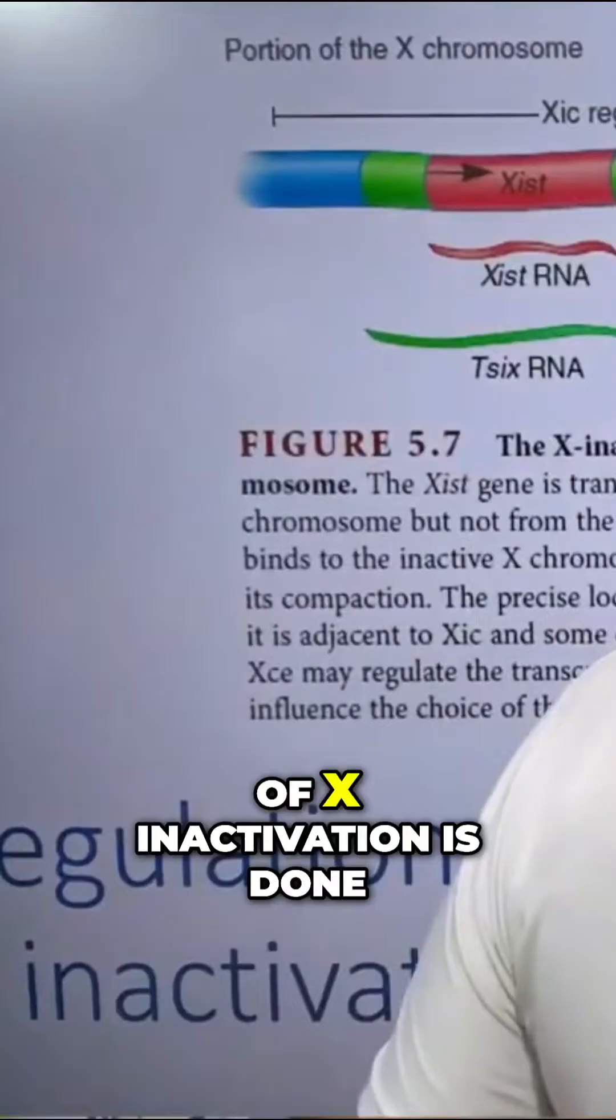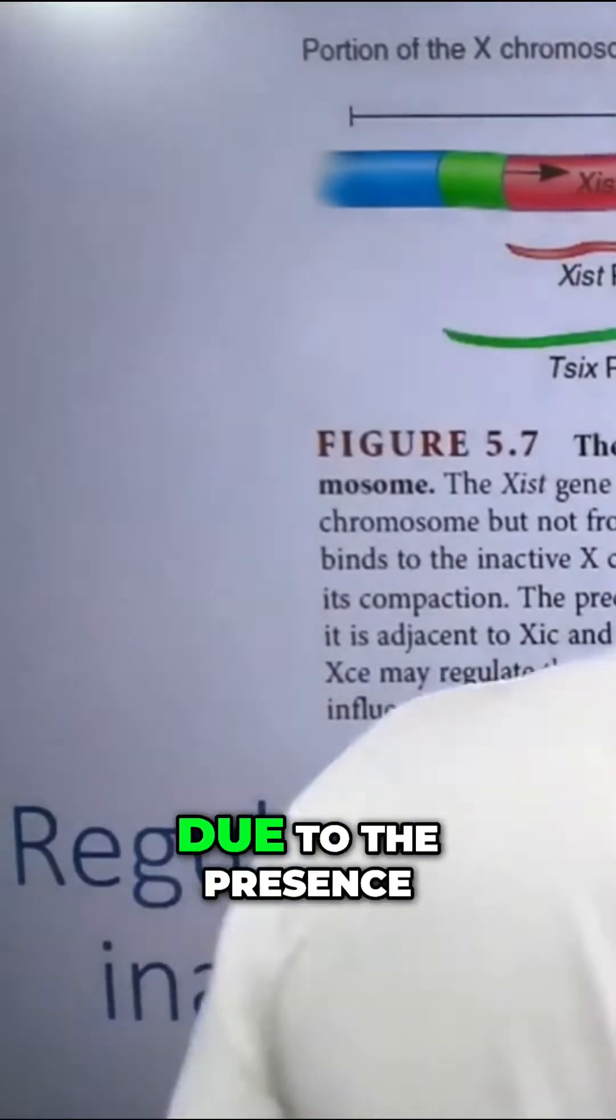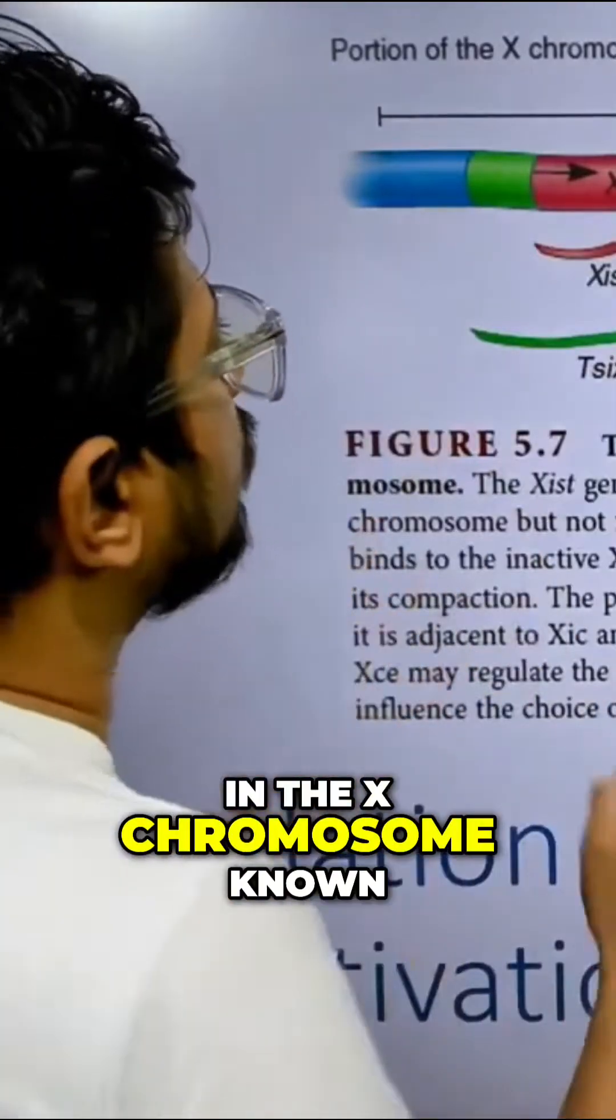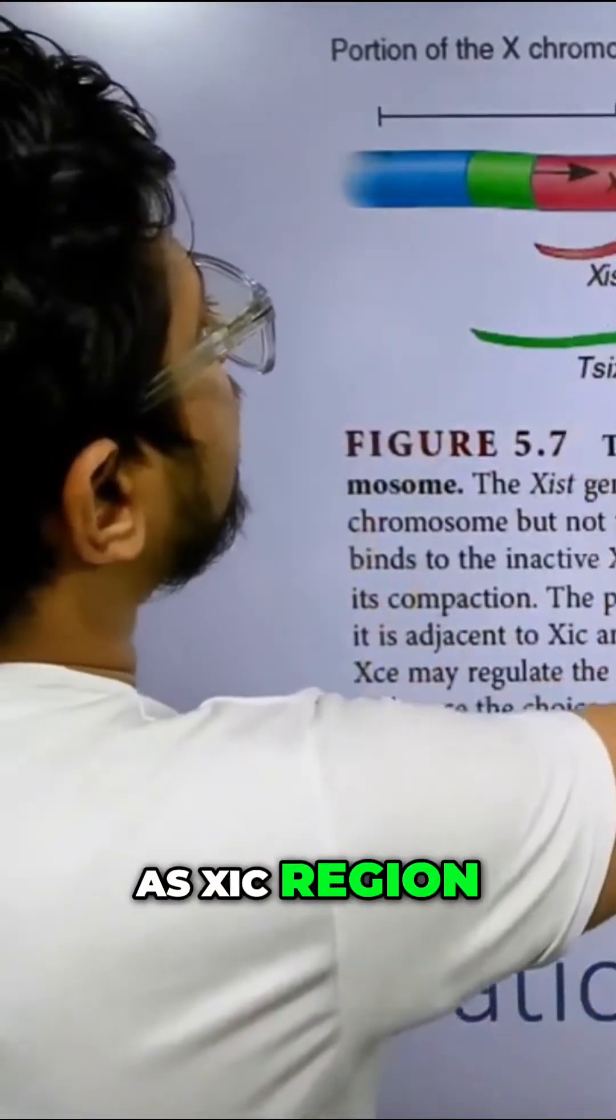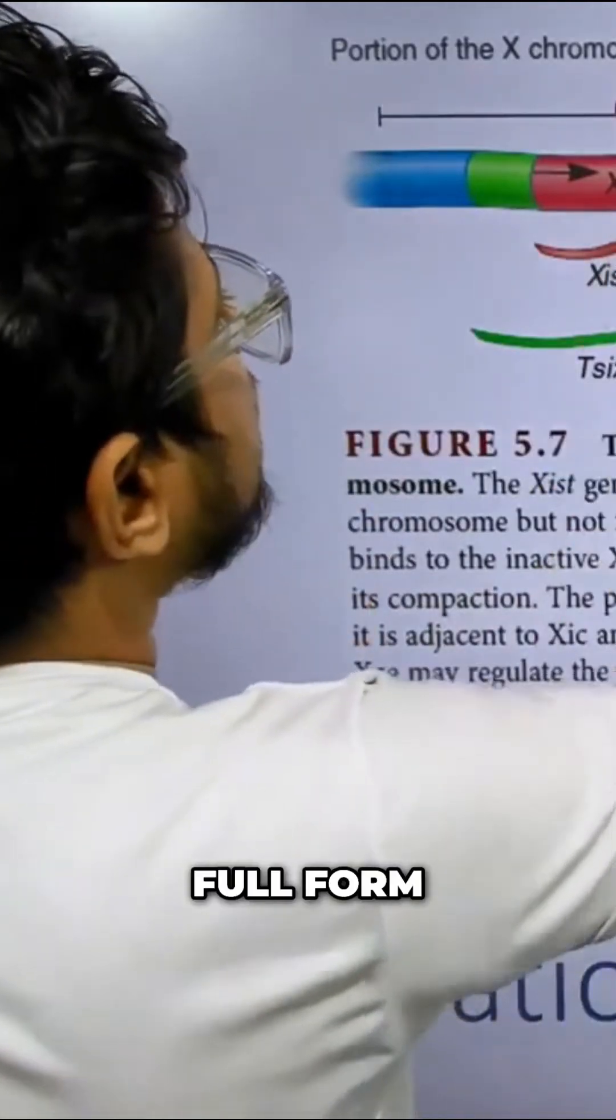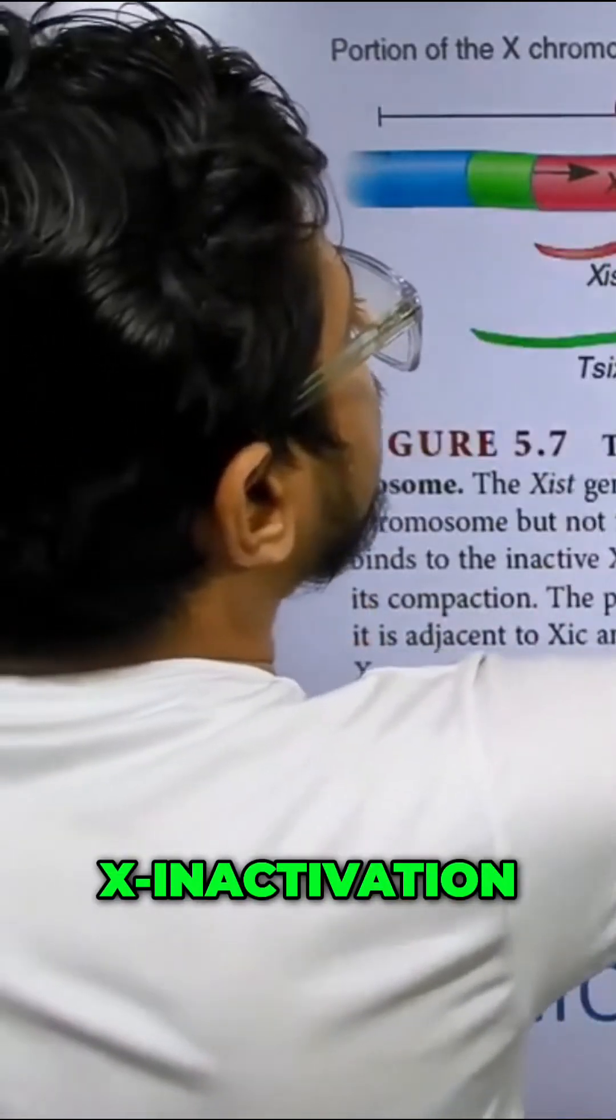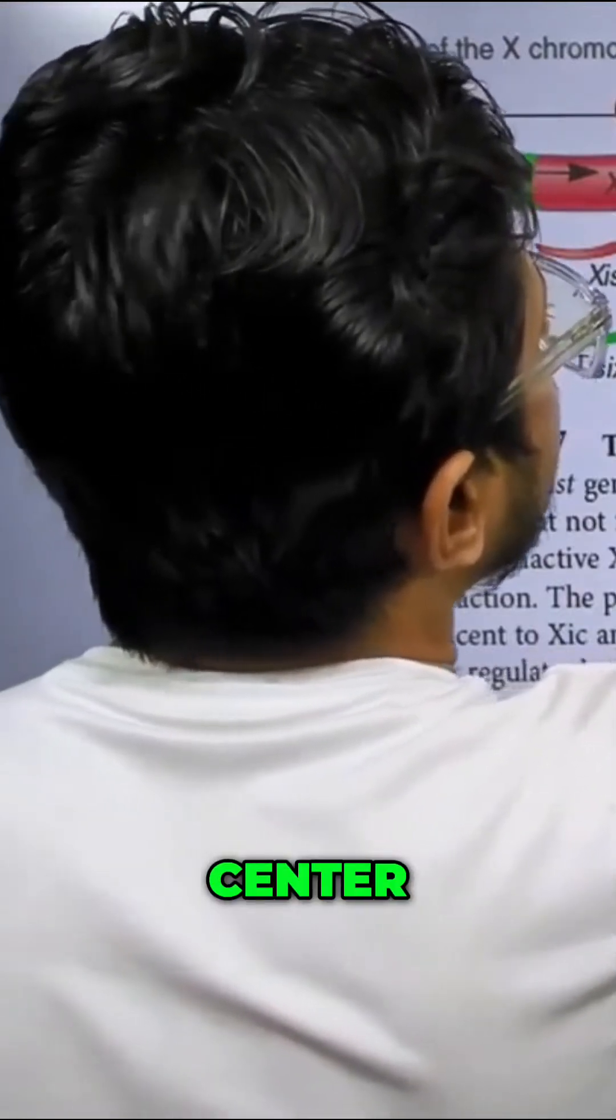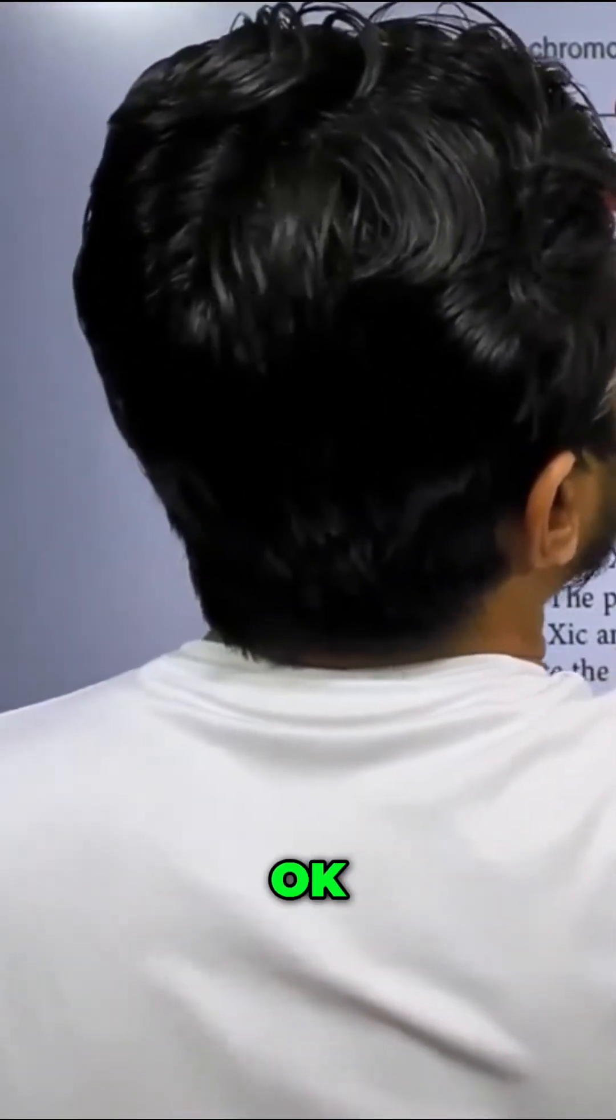Now the regulation of X inactivation is done due to the presence of a specific region in the X chromosome known as X IC region. X IC full form is X inactivation center.